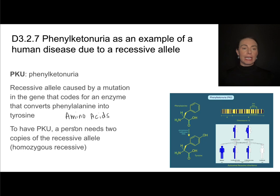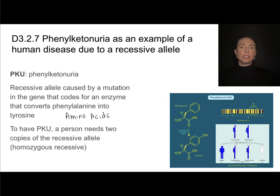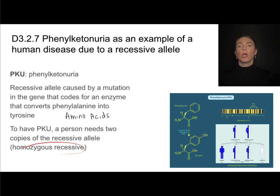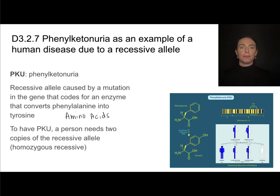What's important here is that you understand the inheritance pattern. Because it is recessive, in order for a person to actually have PKU, they must have two recessive alleles — they must be homozygous recessive — which means that both of their parents need to have at least one copy of that recessive allele.